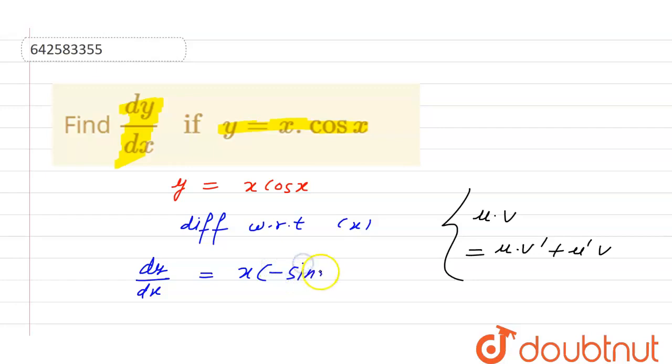Plus differentiation of x, which is one, times cos x remaining as it is. So this equals minus x sin x plus cos x. Thank you.